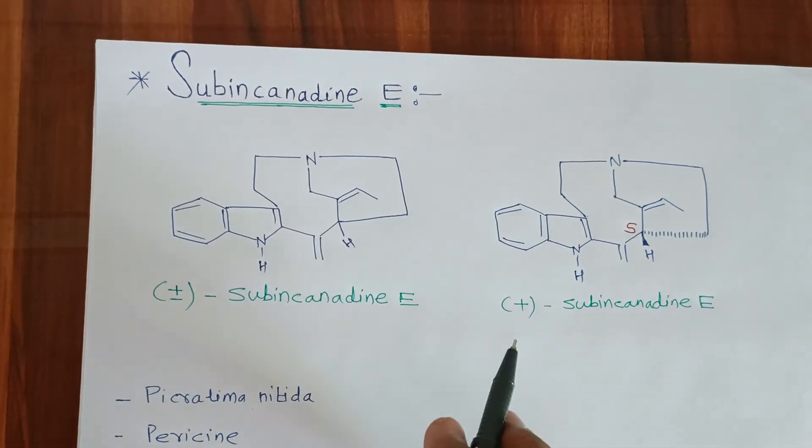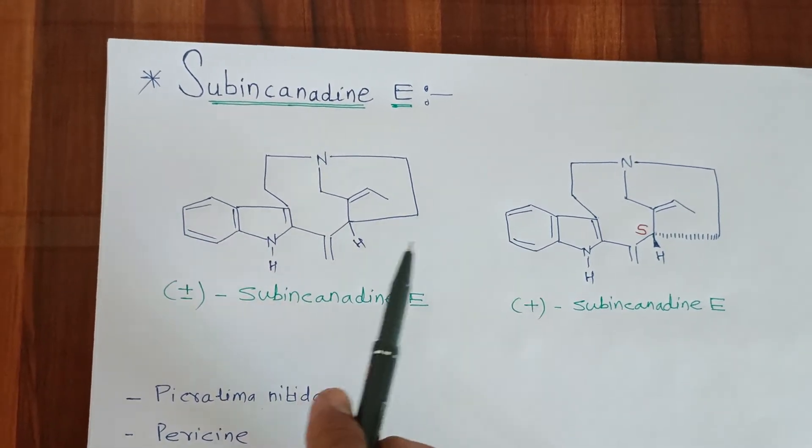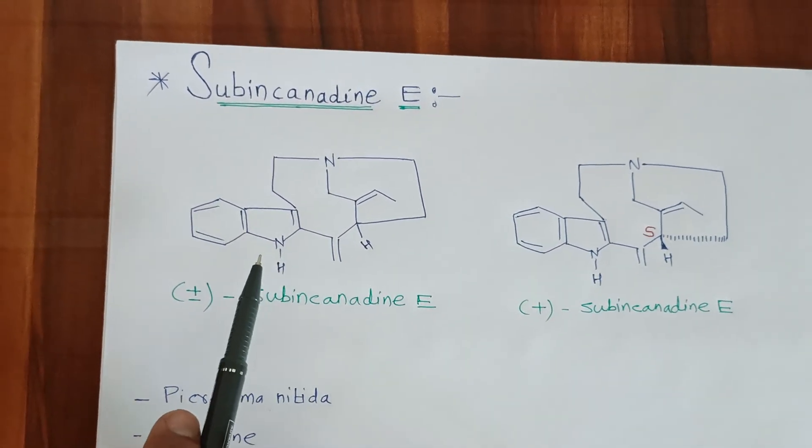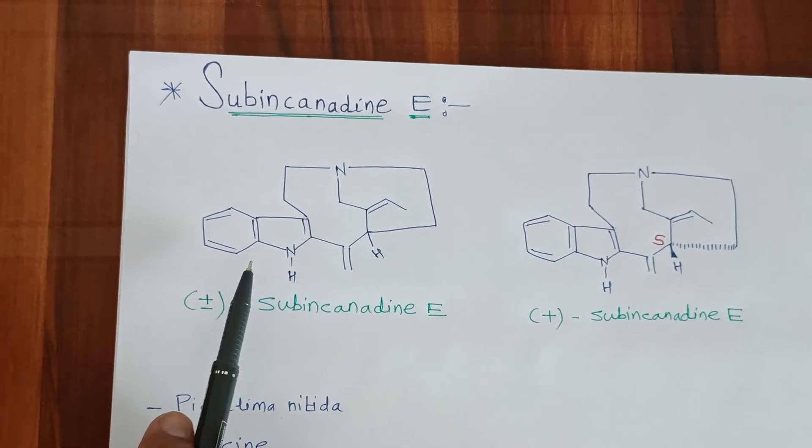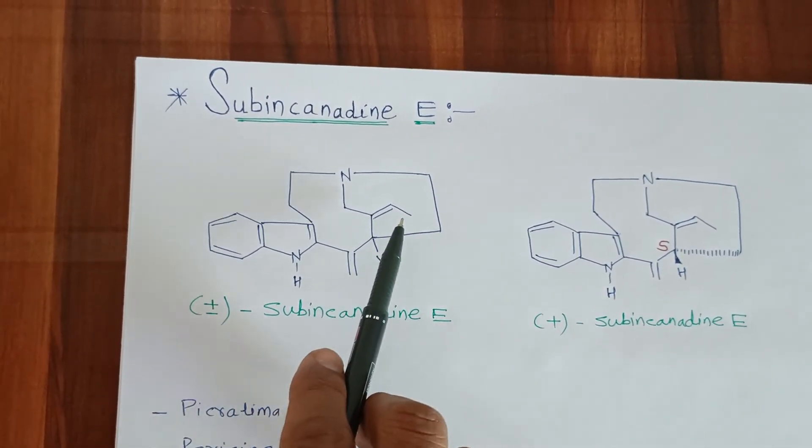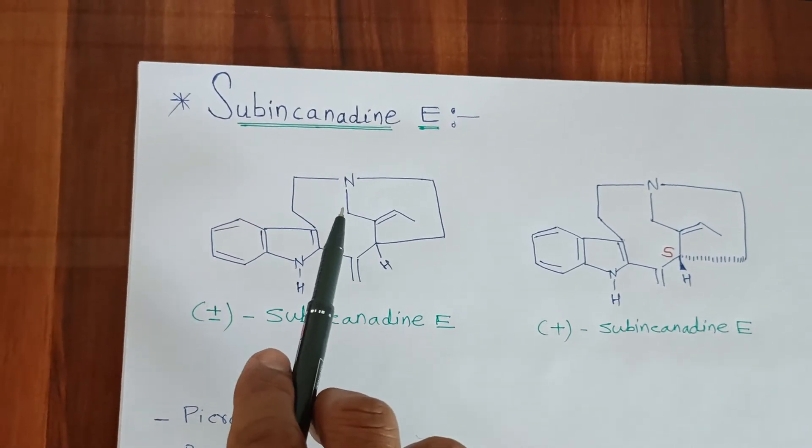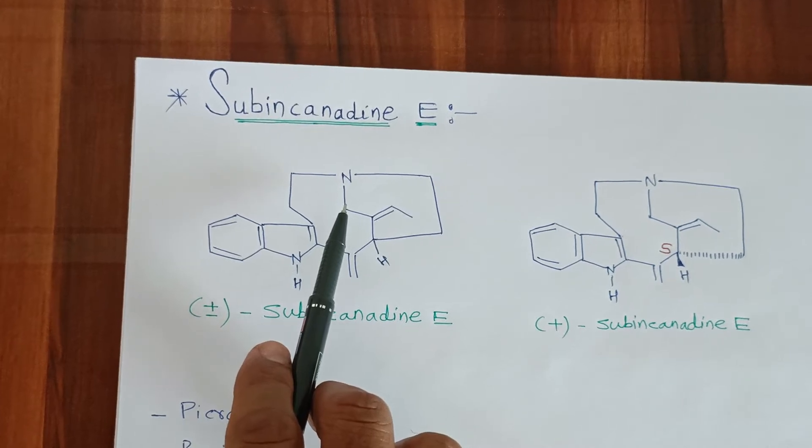Subincanadine E consists of such structural features. It consists of one indole ring system. There is presence of two cyclic ring systems. In between the two cyclic ring systems, there is presence of one nitrogen atom.